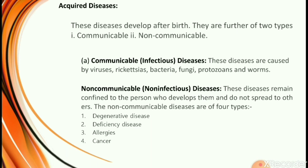Diseases that develop after birth are called acquired diseases. They are further divided into two types: communicable and non-communicable diseases. Communicable diseases can spread from one person to another and are caused by viruses, bacteria, fungi, or other microorganisms, and are generally referred to as infectious diseases. Non-infectious diseases remain confined to the person who develops them and do not spread to others.